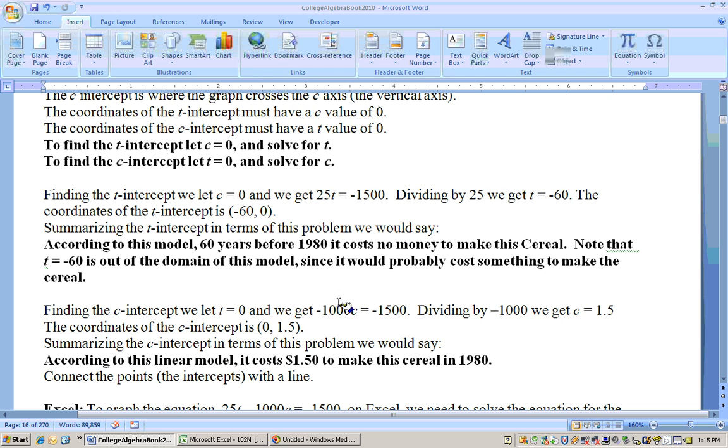So I would divide both sides by the negative 1,000. And if I do that, negative 1,500 divided by negative 1,000, two negatives divided make a positive, and it would actually be 1.5. The point would actually be zero comma 1.5.